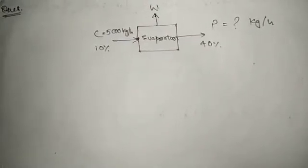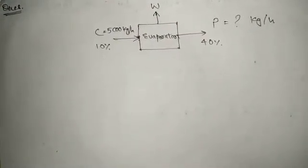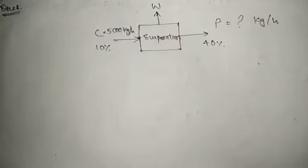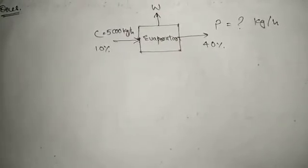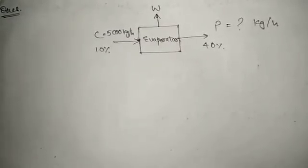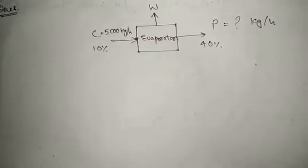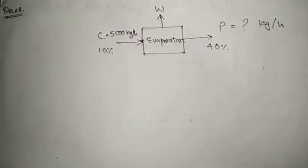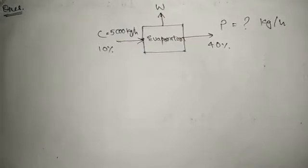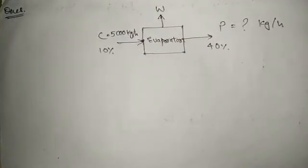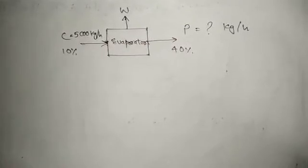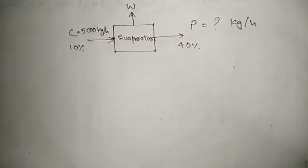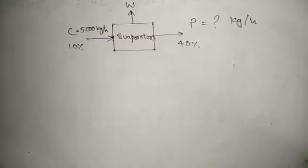We have another question. A single-effect evaporator is used for the concentration of fruit juice. The feed is 5,000 kilograms per hour with 10 percent concentration. When put inside the evaporator, some water W evaporates. We need to find: what amount of product will be produced per hour, and what amount of water will be evaporated, if the concentration of the final product is 40 percent? We can write the equation: C = W + P.